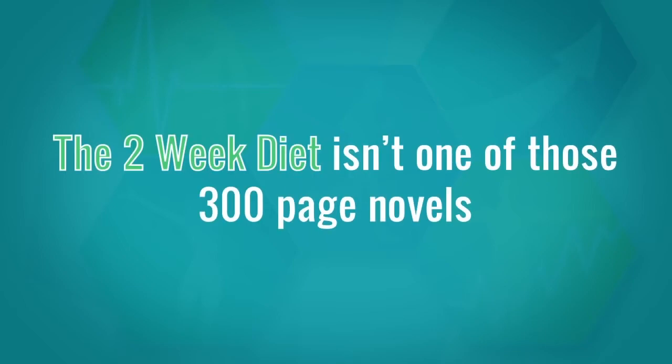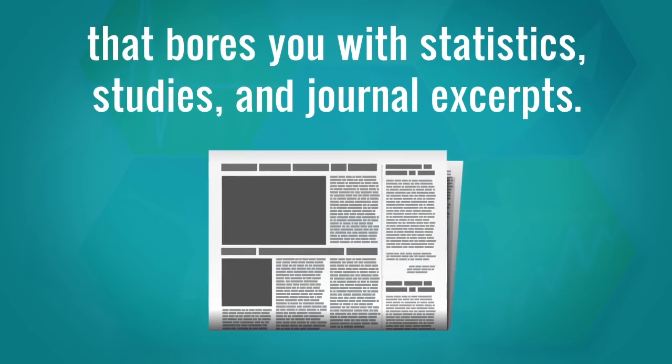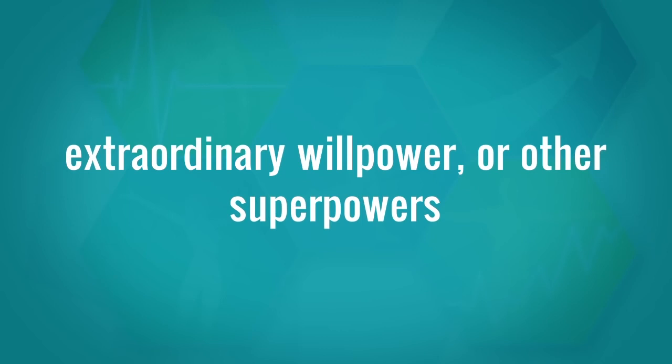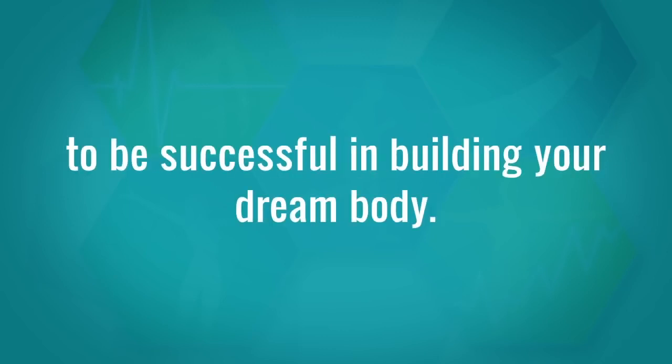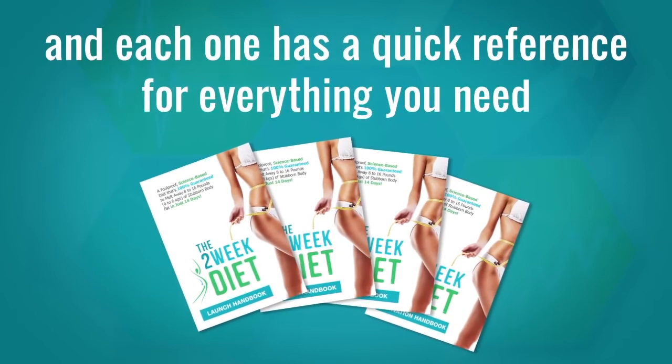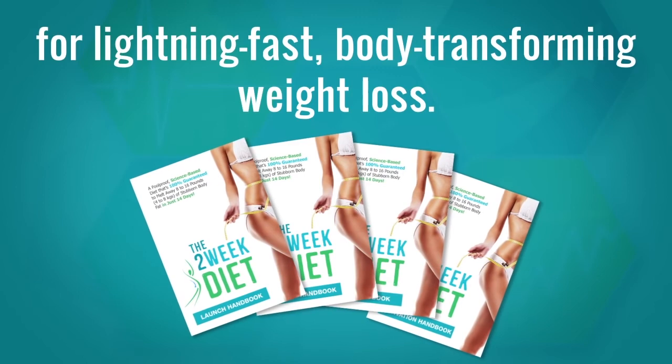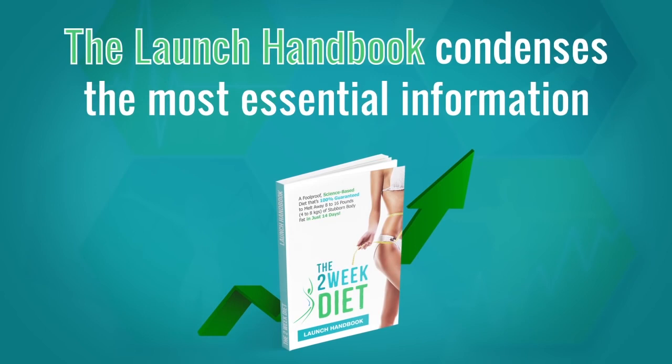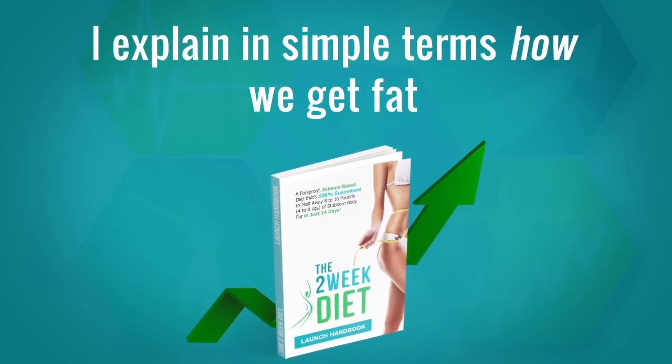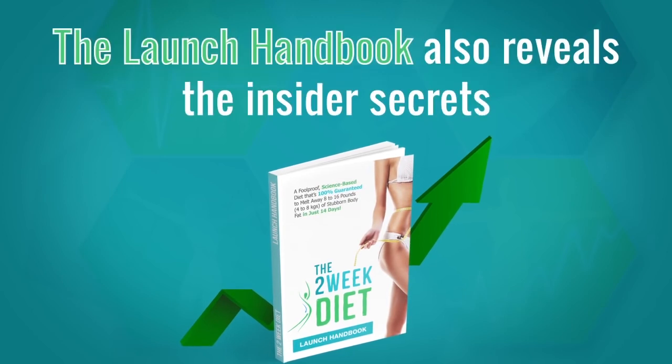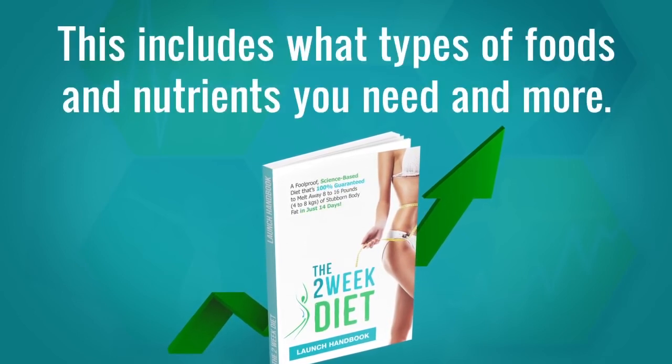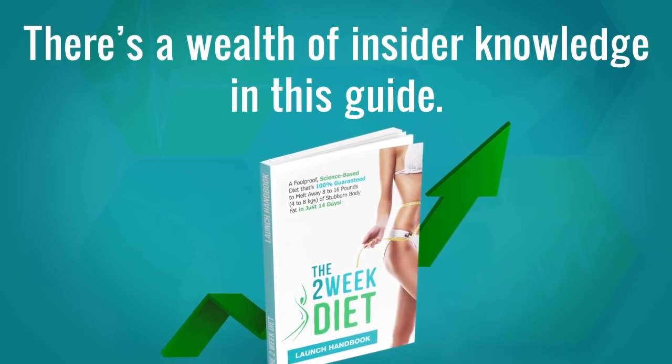The two-week diet isn't one of those 300-page novels that bores you with statistics, studies, and journal excerpts. If you're like most people I know, you just want a straightforward, step-by-step plan of action. The two-week diet system is broken down into four separate handbooks. The Launch Handbook condenses the most essential information and sends you off informed and motivated. I explain in simple terms how we get fat and exactly how to lose weight fast. This includes what types of foods and nutrients you need and more.